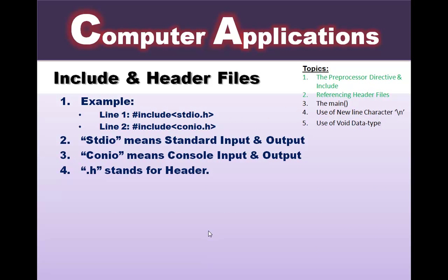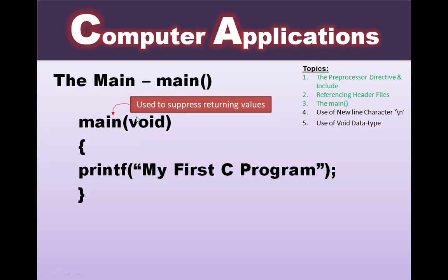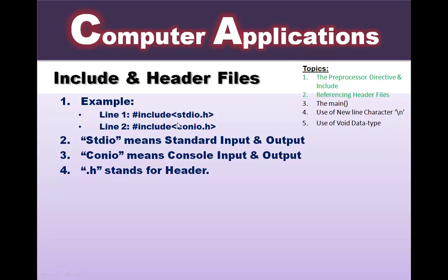Now, include and header files — here is the example. You write the hash sign, then include, then angle bracket open, stdio.h, angle bracket close. stdio.h means standard input/output, and .h means header file. Line 2: include conio.h — console input/output. These two lines depend on the type of your program and how many libraries you require.